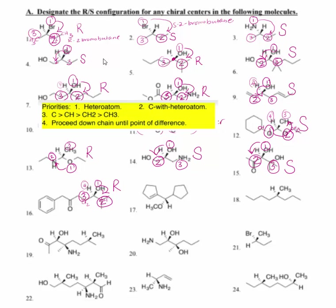Number seventeen: we have an oxygen pushed to the rear, and two cyclopentyl rings — one with a double bond and one without. We look for the atoms of difference. Counting along the ring, at position four this is a C with no Hs, but this one has an H. Using the rule that fewer hydrogens means higher priority, the ring with the double bond is number two and the single-bonded ring is number three. This rotates clockwise, but our H is pushed out to the front. So that makes this an S configuration.